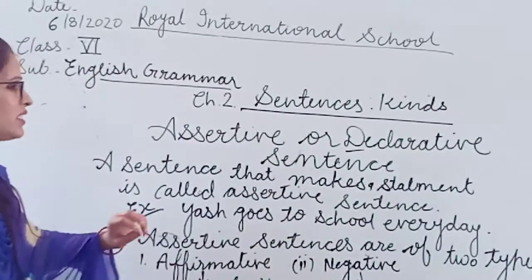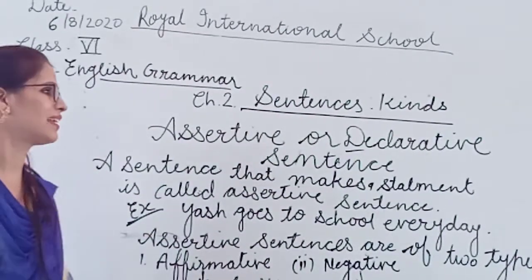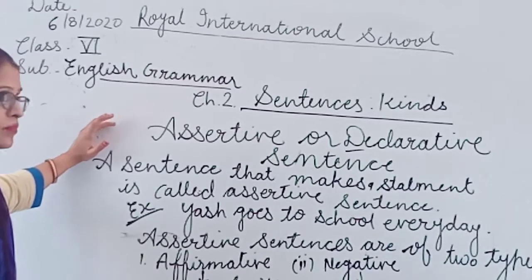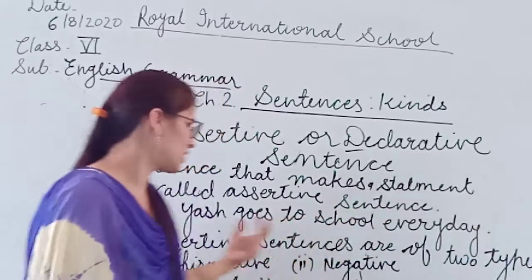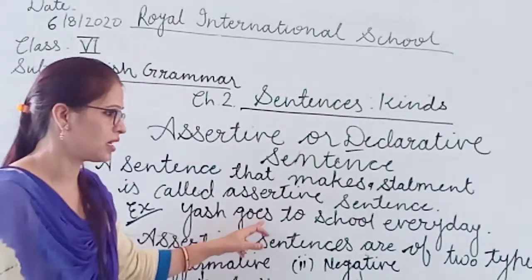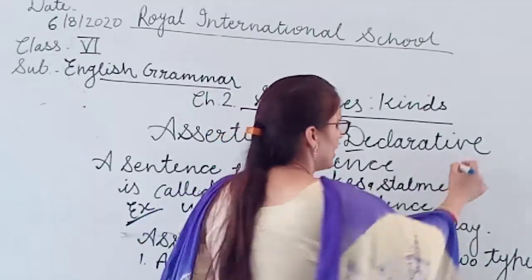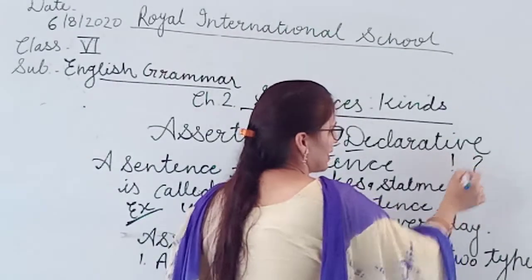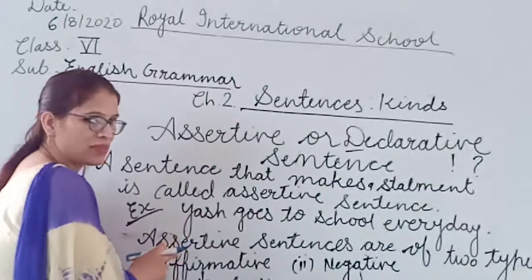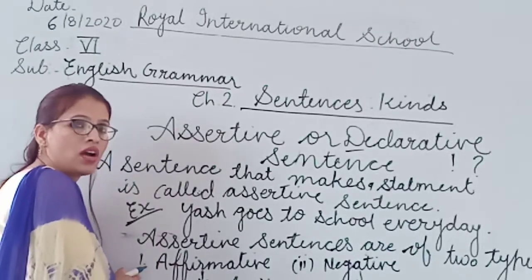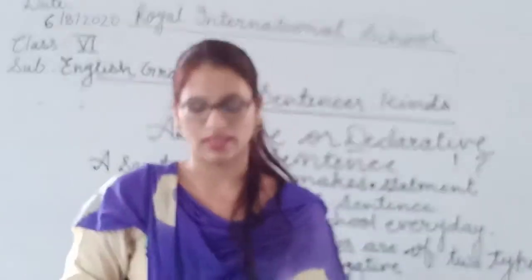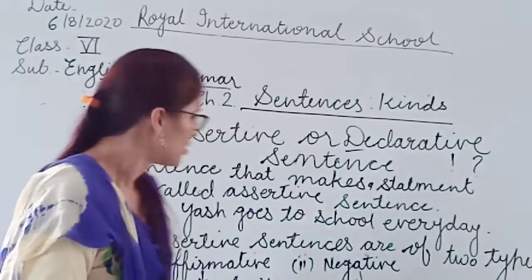So the assertive sentence we explained is also called a declarative sentence - it is a sentence that makes a simple statement. It starts with a subject, has a subject and predicate, ends with a full stop, no exclamation sign, no question mark. Assertive sentences can be divided into two types: affirmative and negative.